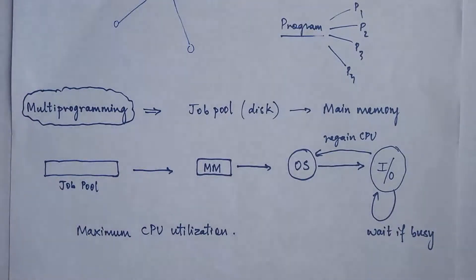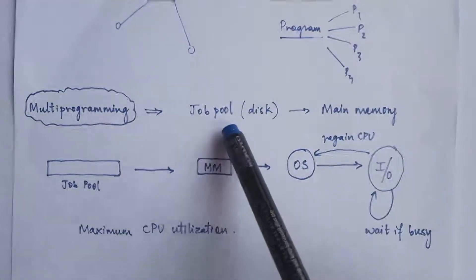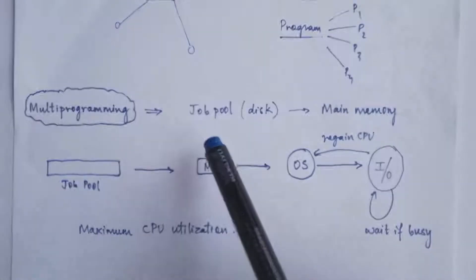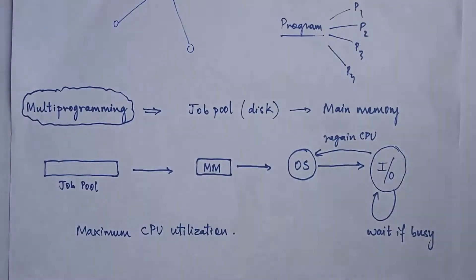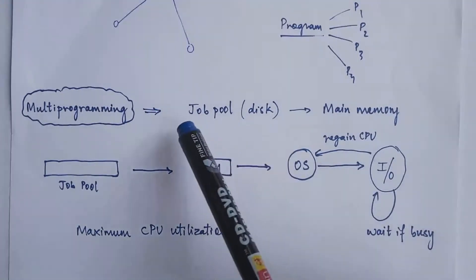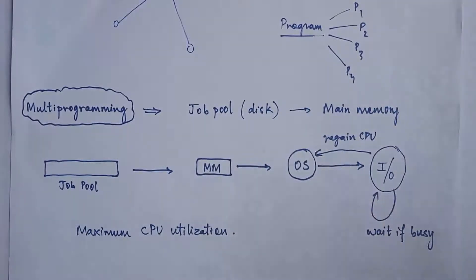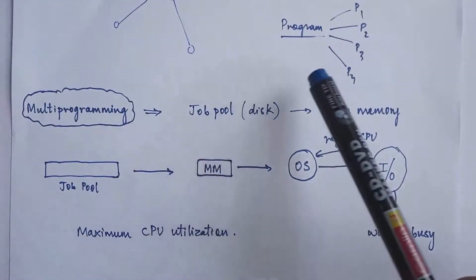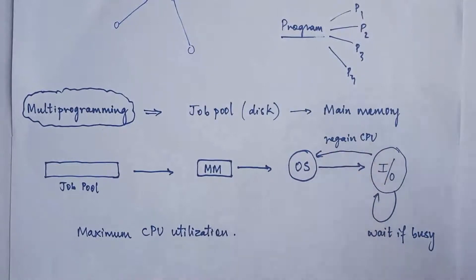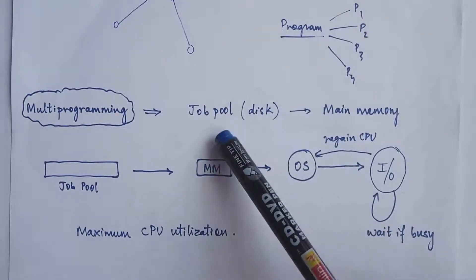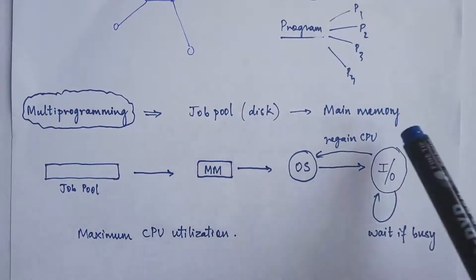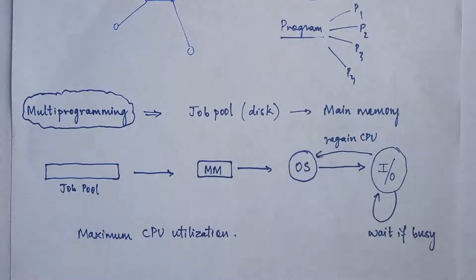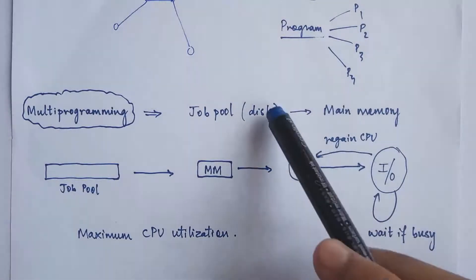Now let's see how multiprogramming is implemented. Since there are many processes, all those processes reside in a place on the disk called a job pool. The job pool has all the processes which demand CPU — stored in the disk, that is secondary memory. From those processes in the job pool, a few are brought into the main memory. Since the main memory is not as large as the disk, only a few processes can be brought in, and they are selected by disk scheduling algorithms.